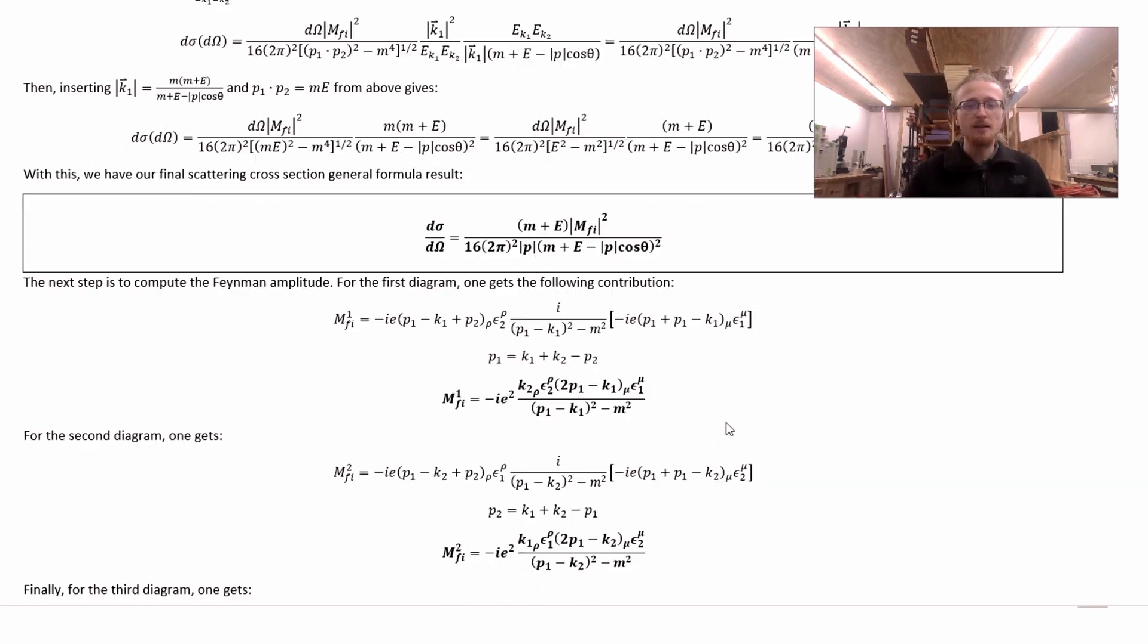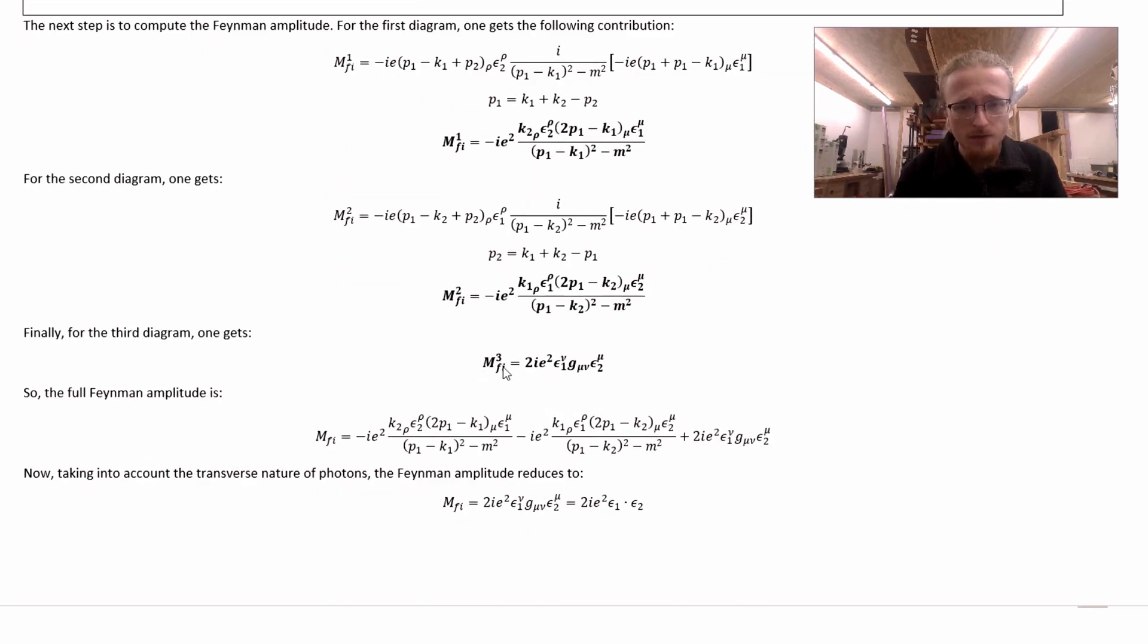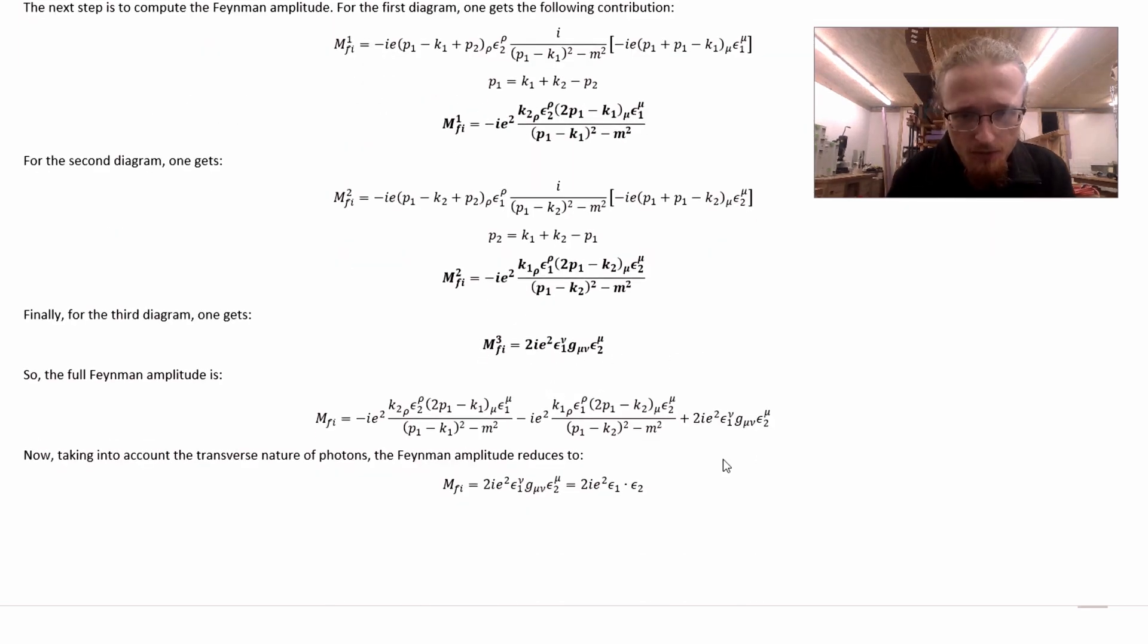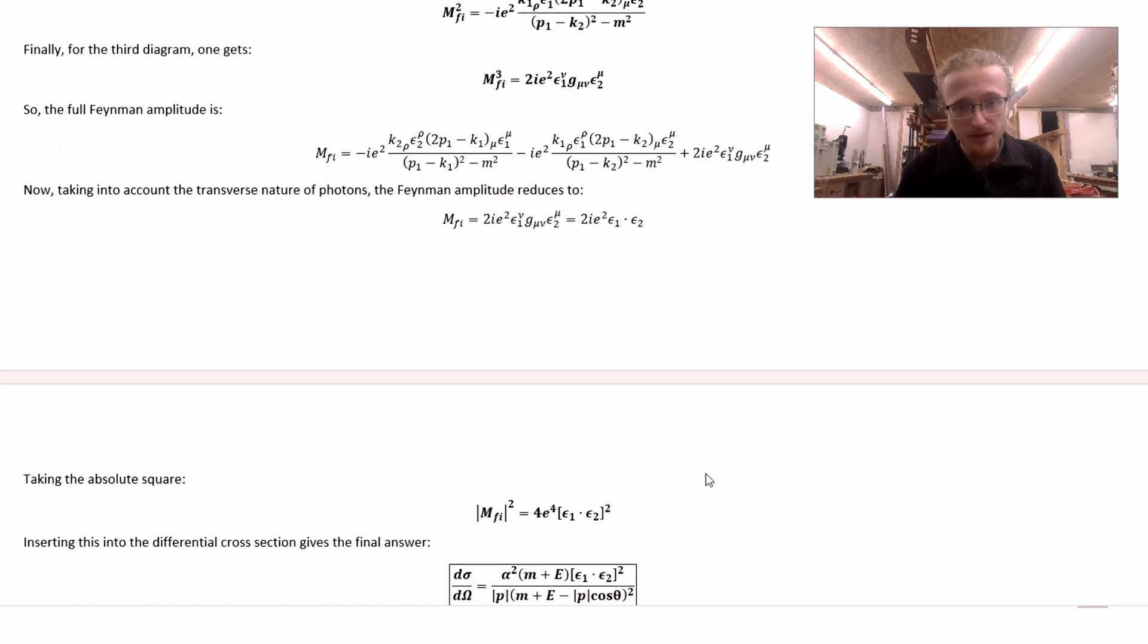If we take a look back at that table of Feynman rules and the Feynman diagrams, we see that the first one gives this contribution, the second one gives this contribution, and the third one gives that contribution. And of course, the full Feynman amplitude at the tree level is just the sum of those three. Now, if we recognize that photons are transverse, we see that these two terms are actually zero, and therefore the first two Feynman diagrams actually don't contribute anything at all. We are therefore left with this result for the Feynman amplitude, which is exceptionally simple. It makes our lives easy.